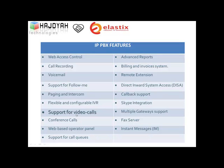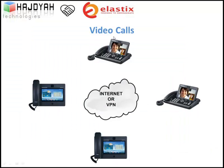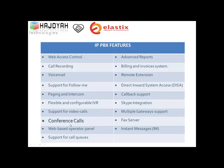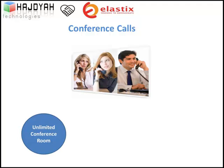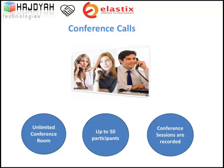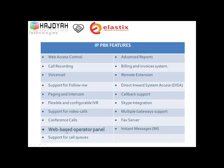Video Call: You can use video phones to make video calls between employees, even across multiple branches. Conference Call: Conference calls allow you to join more than two persons on the same call. In Elastisk, you can make unlimited conference calls simultaneously, with each call handling up to 50 participants, and all conference sessions are recorded.